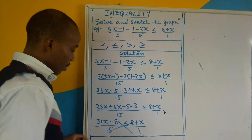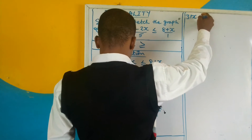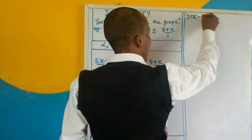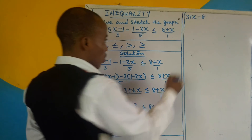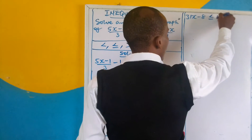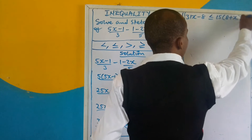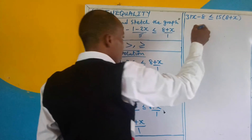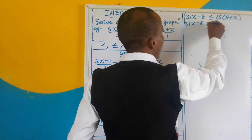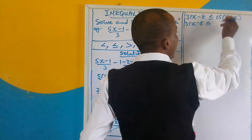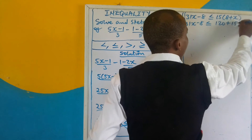Let's cross-multiply. This we multiply by 1, we are left with 31x minus 8. Any number that multiplies 1 stays the same. Then 15 we multiply this side. It's less than or equal to 15 in two brackets: 8 plus x. Opening up: 15 times 8 is 120, plus 15 times x is 15x.